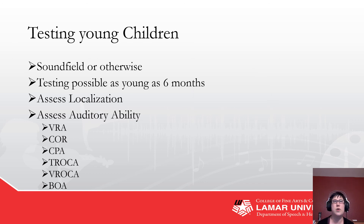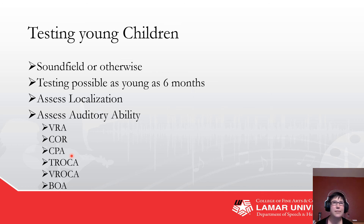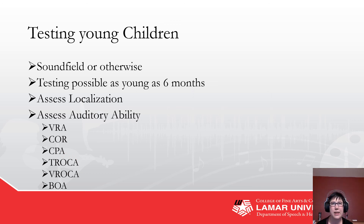For testing young children you'd use VRA, VROCA, CPA, or BOA — behavioral observation audiometry. Even the best people at BOA are not super accurate, because you're just looking for eye blinks and slight movements, so you get a lot of variability. VROCA is visually reinforced operant conditioning audiometry, as opposed to just visual reinforcement audiometry. You'll learn more about these in your peds class. Mostly you don't use these on adults.